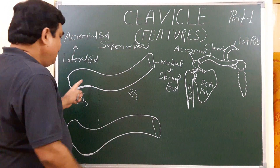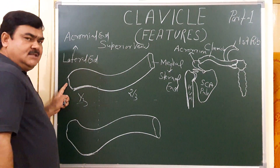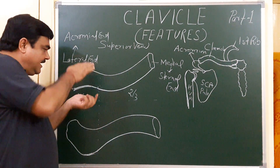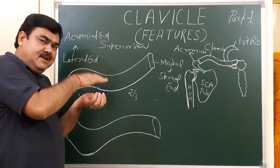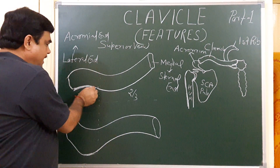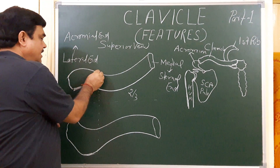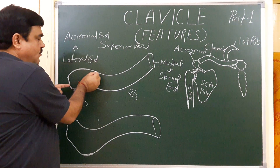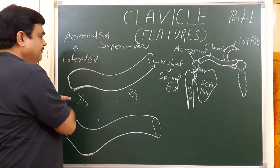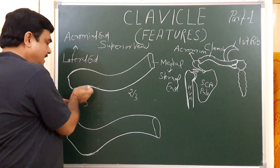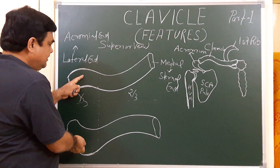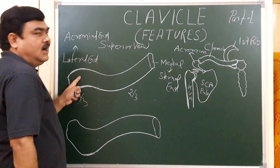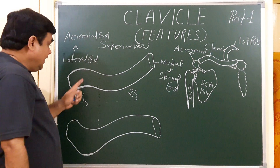In the lateral one-third part, this part is flat — it is flattened superoinferiorly. So it has an anterior border and a posterior border. The anterior border is concave anteriorly, and the posterior border is convex posteriorly. It has a superior surface and an inferior surface.